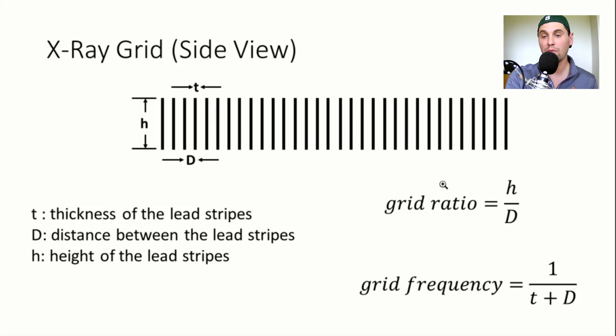And then the grid ratio is what we talk about, which is just the height of this divided by the width of the opening. That's called the grid ratio. And then the grid frequency is how often does that grid repeat. So the grid repeats every D plus t. So the frequency is one divided by t plus D.